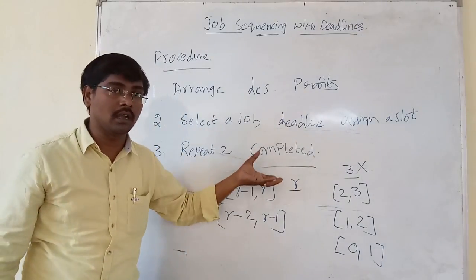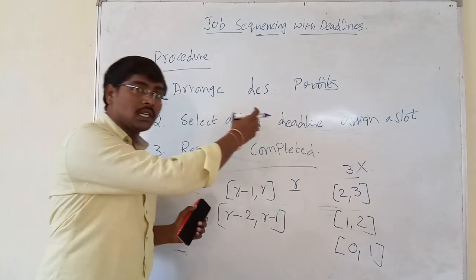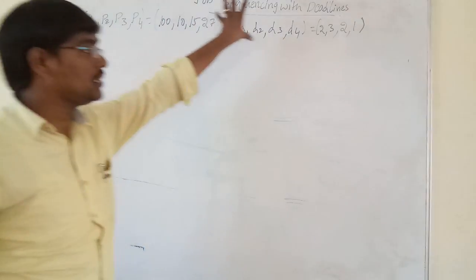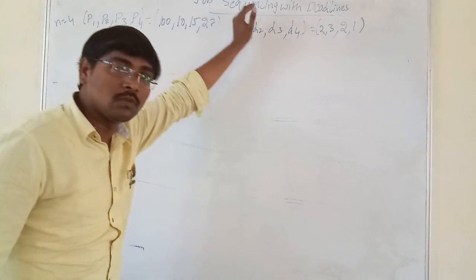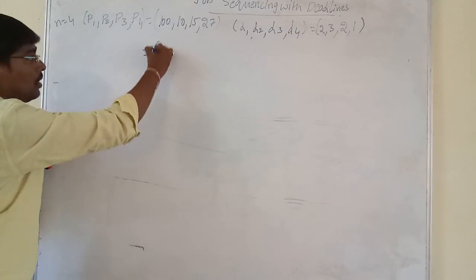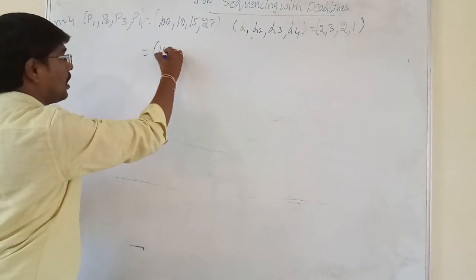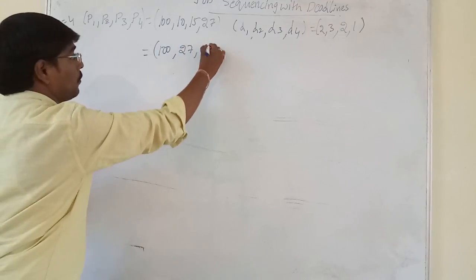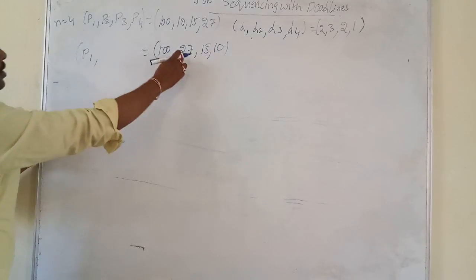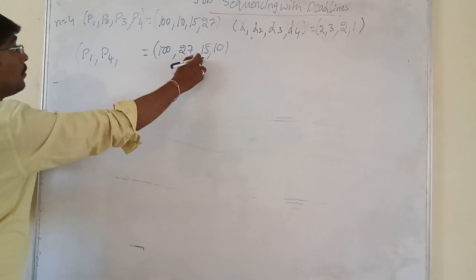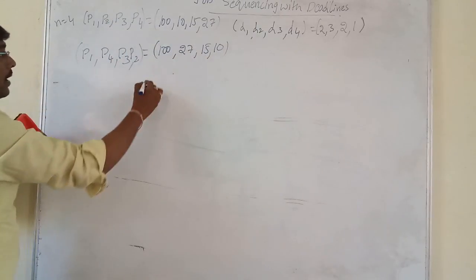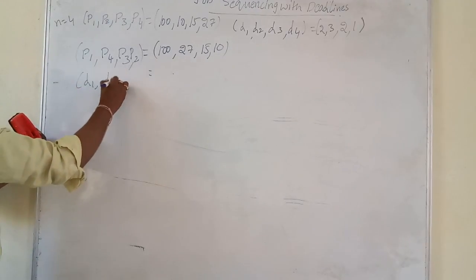Now let us consider an example. We are considering 4 jobs with 4 profits and 4 deadlines. According to the job sequencing with deadline greedy approach, the first step is to arrange all the jobs in descending order of their profits: 100, 27, 15, and 10. The corresponding jobs are P1, P4, P3, and P2.